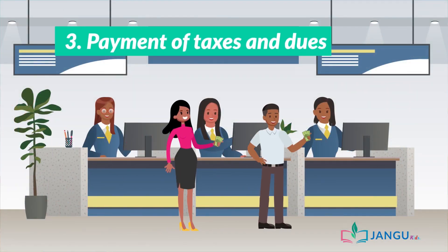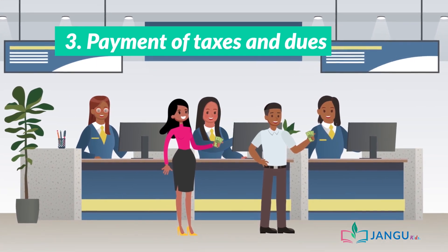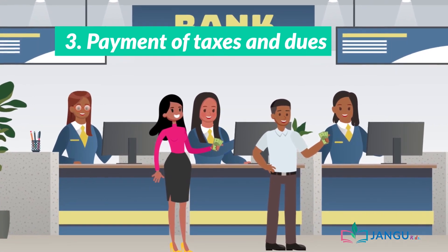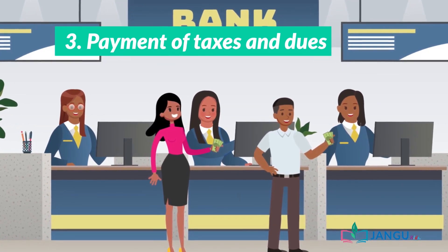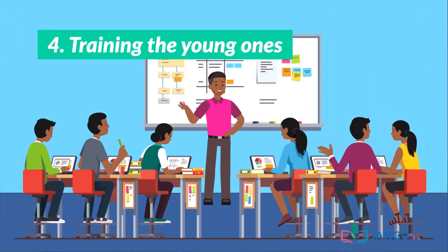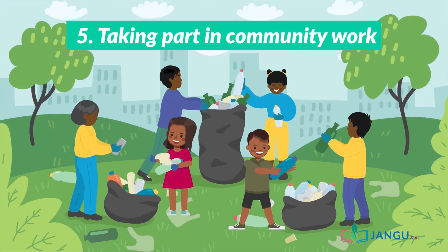Number two: cooperation — every member of the community must join hands together to develop their community. Number three: payment of taxes and dues — funds are needed to develop the community; members must ensure they pay taxes to ensure rapid development of the community. Number four: training the young ones — every mature member of the community must help train the younger ones to become responsible members and leaders of the community in the future.